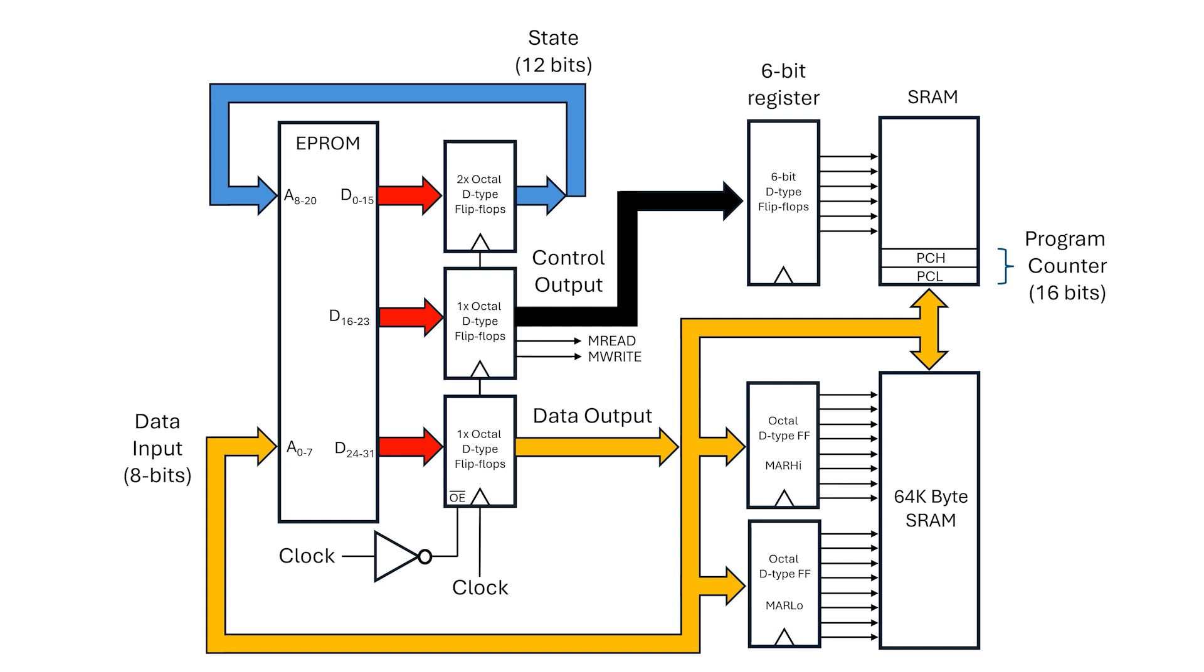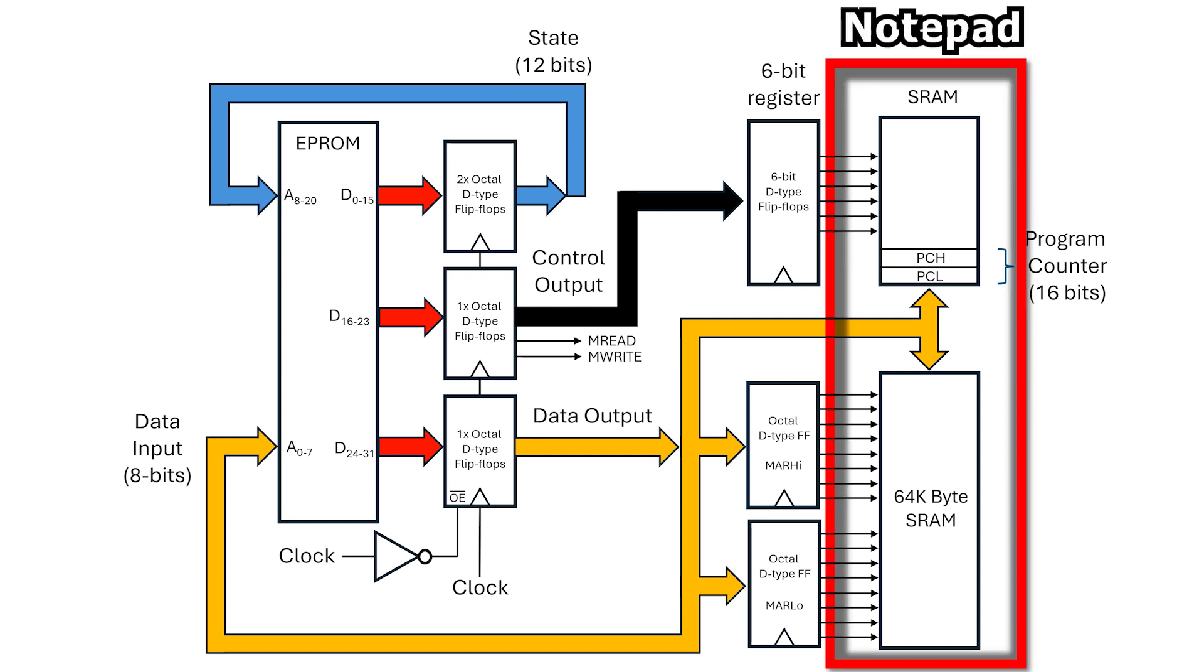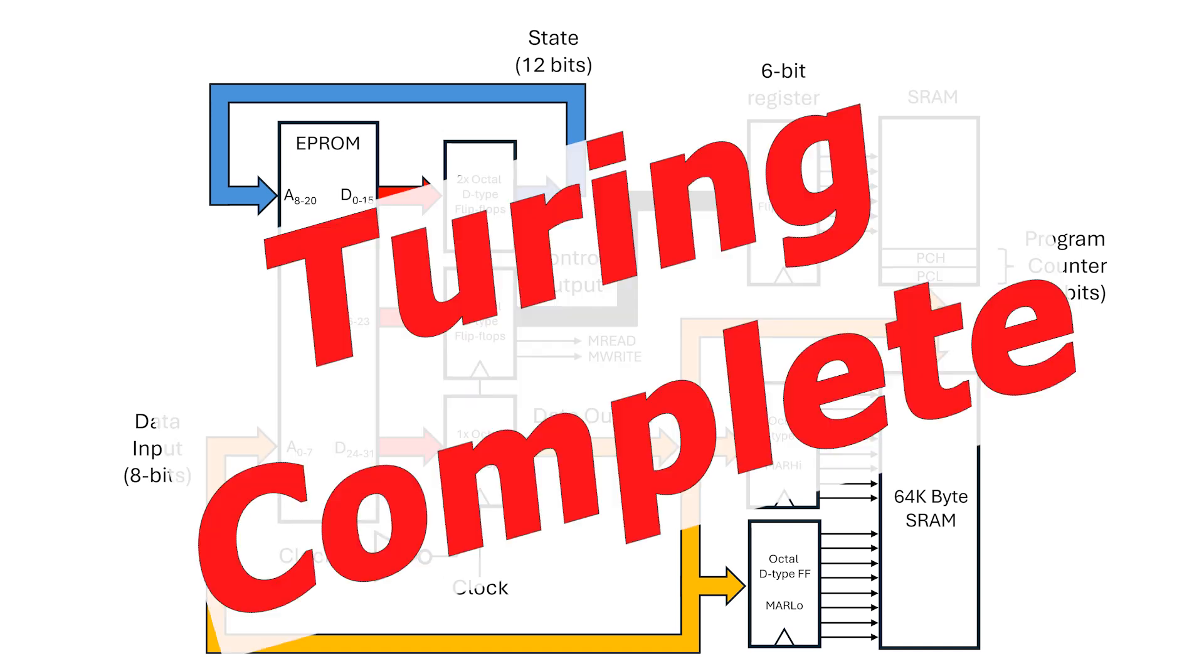And just like that, we've built a system that can execute a sequence of instructions, without the rulebook needing to track absolute memory locations. These two memories together form our notepad. One for storing registers and temporary values, and the other holding our main program and data. With this configuration, we now have a system that's Turing complete, or at least as Turing complete as the 6502 with 64K of main memory attached is.